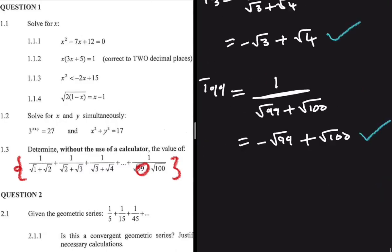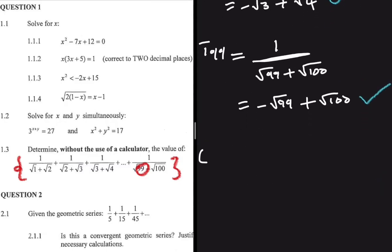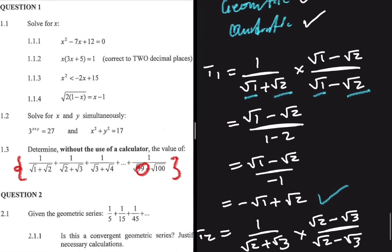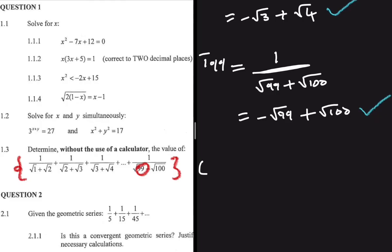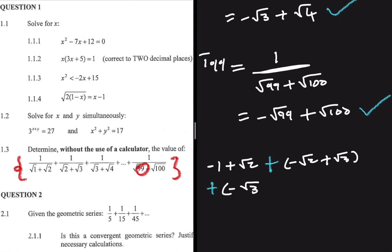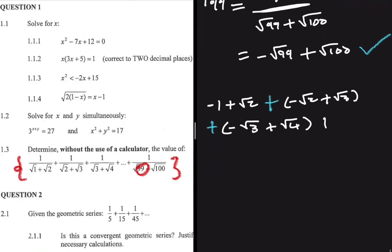Let's rewrite the series using the rationalized terms. T1 gives −√1 + √2, which is −1 + √2. Then we add T2: −√2 + √3. Then T3: −√3 + √4. This continues for all terms in the middle, all the way to the last term T99: −√99 + √100.